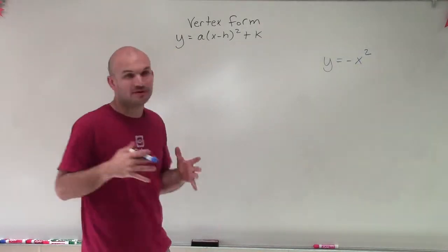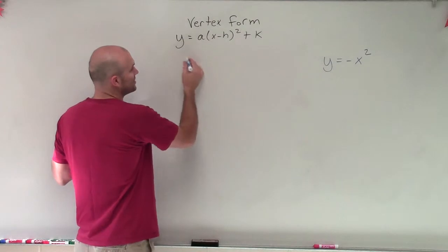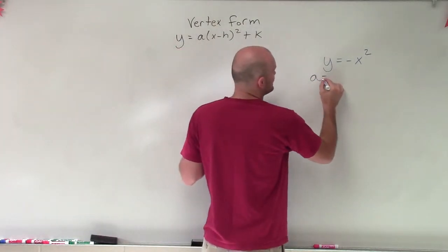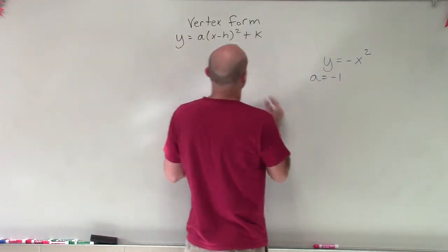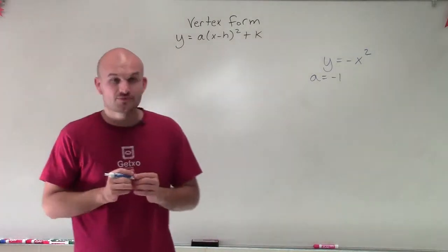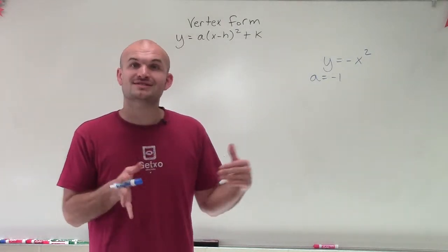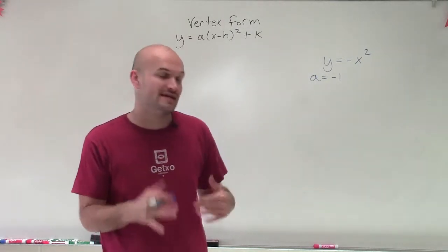So when we look at the vertex form, remember we're going to be dealing with our transformations. And it's important to understand with this one that a is going to equal negative 1. That's going to be our constant that's multiplying by our x squared term. And it's really important to notice that when a equals negative 1 or any negative number, we're going to be able to see that there's going to be reflection over the x-axis.